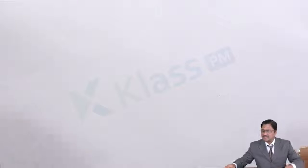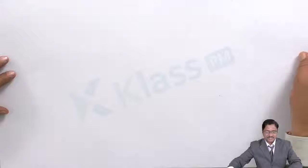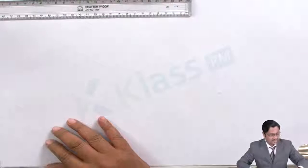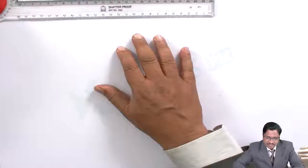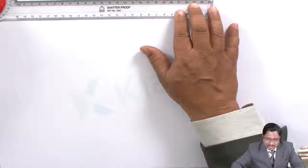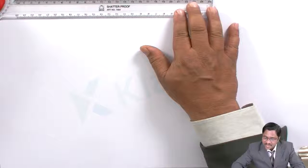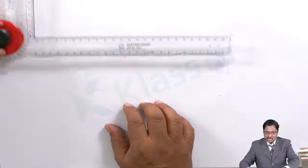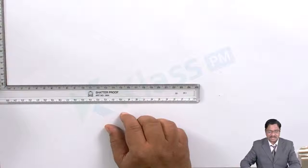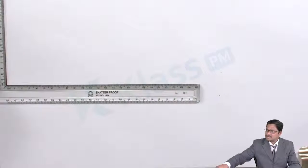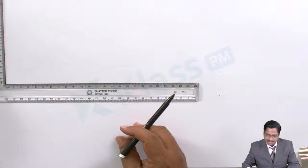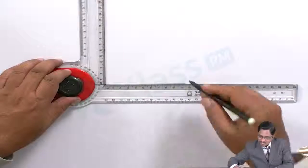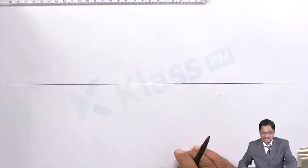Take the mini drafter and ensure it is correctly aligning with the edge of the sheet. Once the alignment is confirmed, draw the XY reference line first.